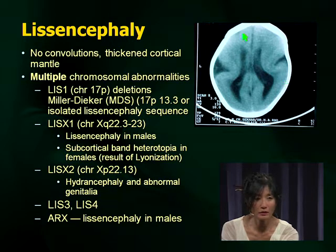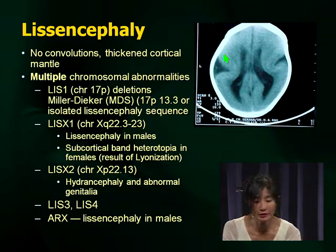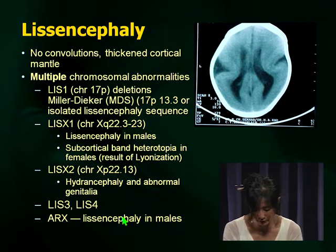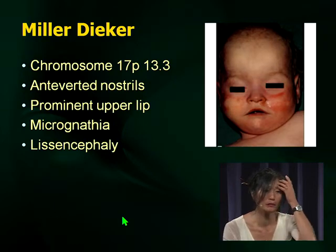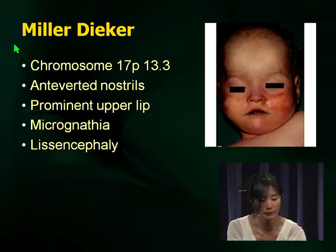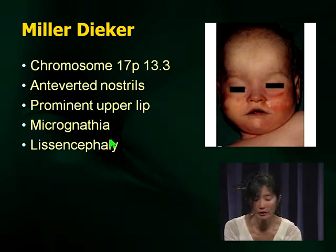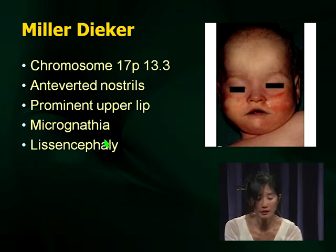There are multiple chromosomal abnormalities associated with lissencephaly, but the one most likely to appear on your examination is Miller-Dieker syndrome — chromosome 17p13.3. Examiners like to test common chromosomal abnormalities. Associated findings include anteverted nostrils, prominent upper lip, and micrognathia, but lissencephaly is the clearly associated finding. These kids have significant developmental delay and difficult-to-control seizures.